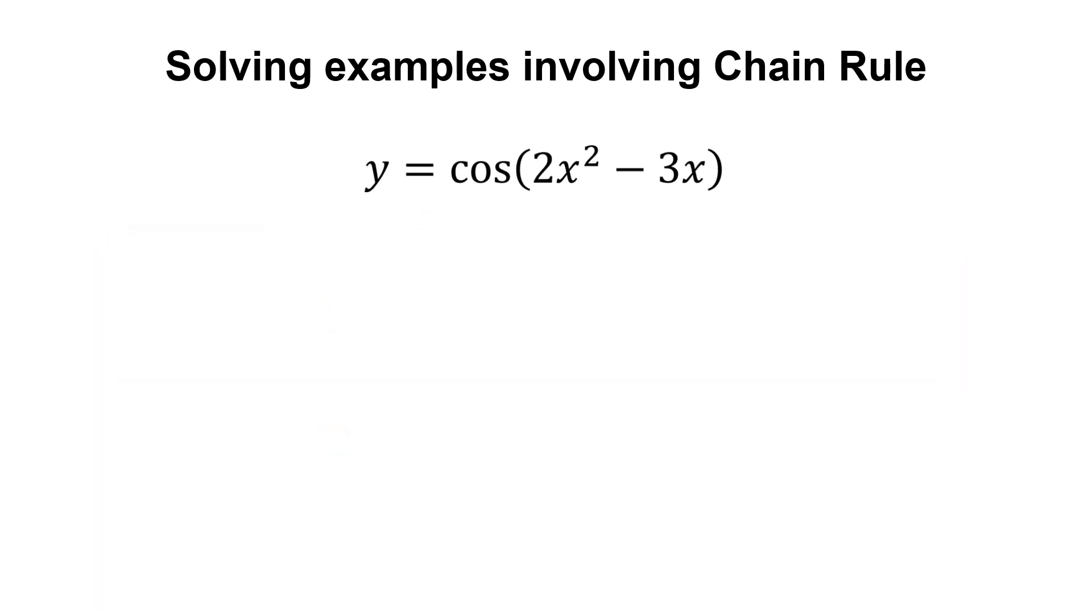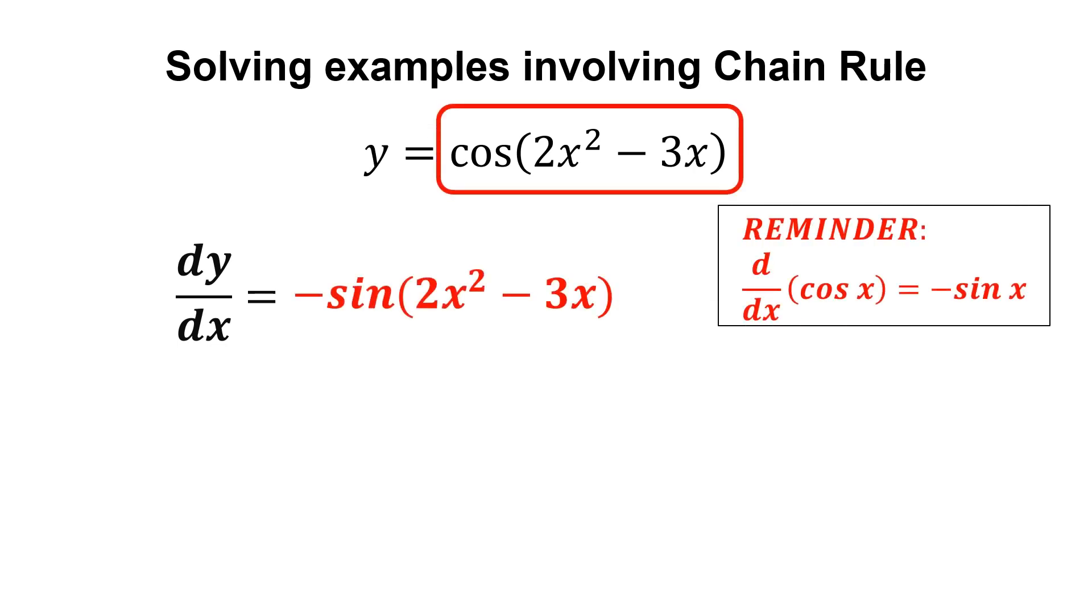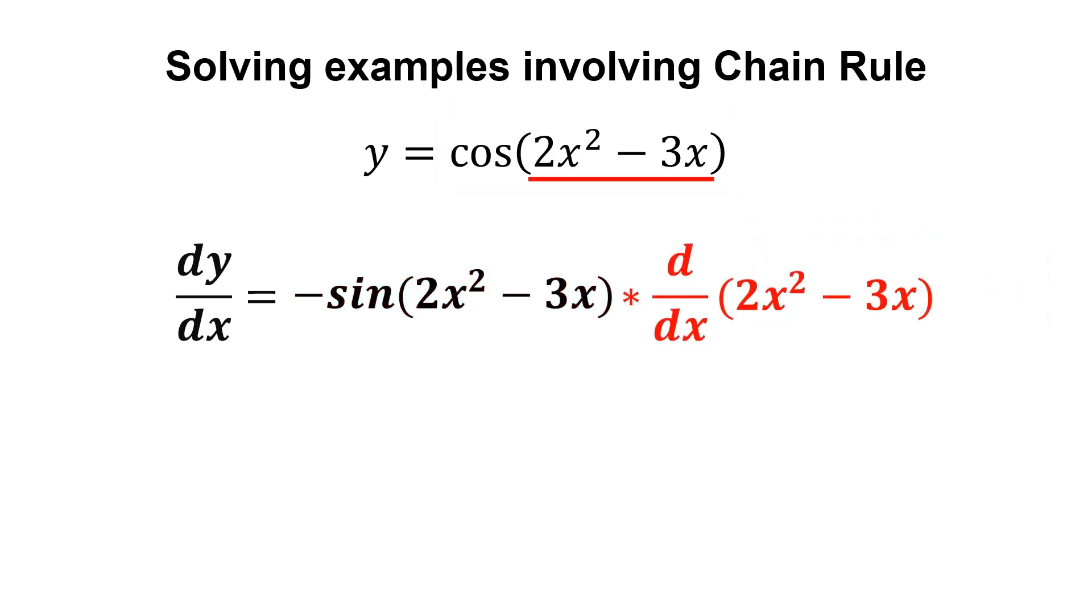Now, let us go through the second example. We first differentiate the whole thing without changing the inner function, so we get negative sine of 2x squared minus 3x. Then, multiply with the derivative of the inner function.